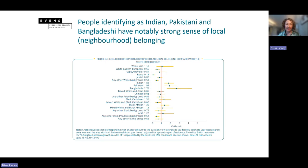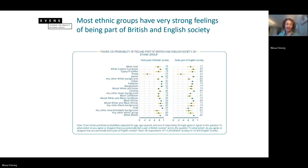We can also look at belonging with this survey. This chart shows the particularly high likelihood of having a strong sense of local belonging for Indian, Pakistani, and Bangladeshi populations in the UK, which raises really interesting issues about community resilience, sustainability, and social cohesion — which could be explored in relation to other aspects of the survey. We also see that most ethnic groups have very strong feelings of being part of English and British society — over 90% probability of feeling part of society for most ethnic groups — the exception being the Roma population.